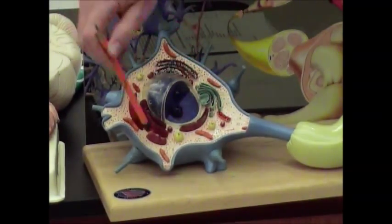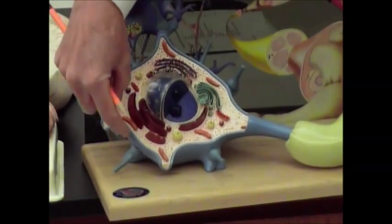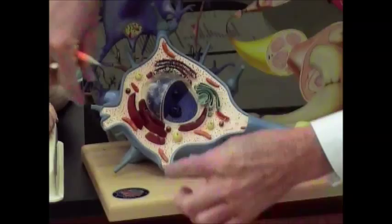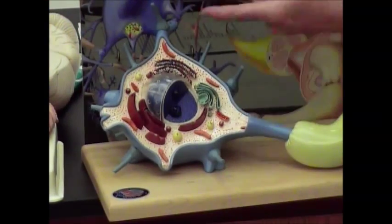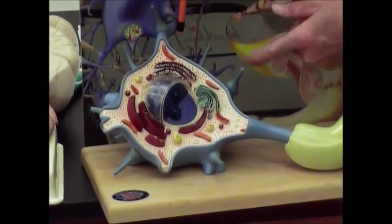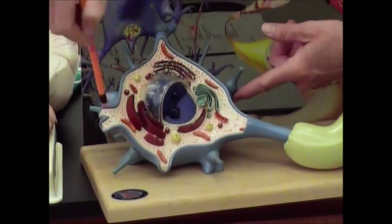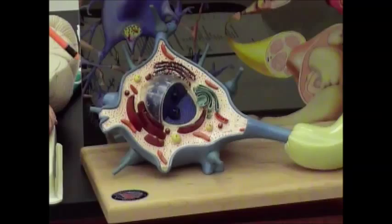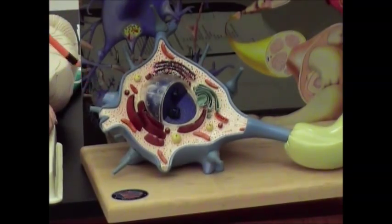All right, you've got two different types of fibers coming off of this cell body or soma. You've got these little fibers here, and they've all been cut off, so they would keep having extensions here like this one right here. These are dendrites, which means they're carrying information toward the cell body. So they're going to be bringing sensory information to the cell body.